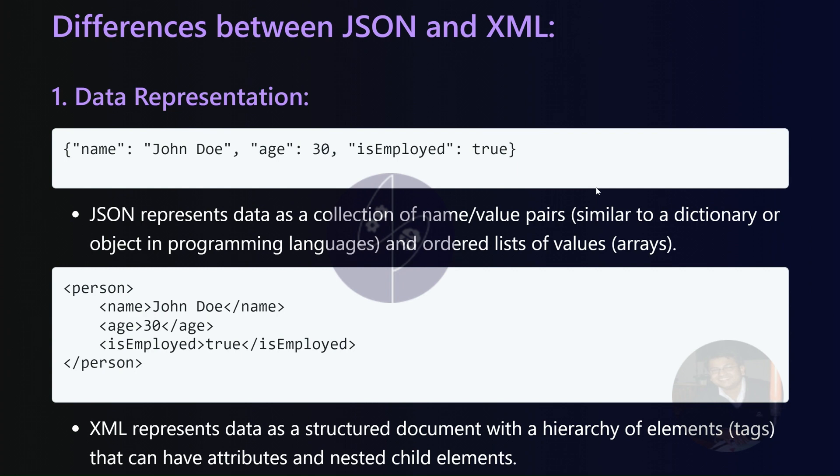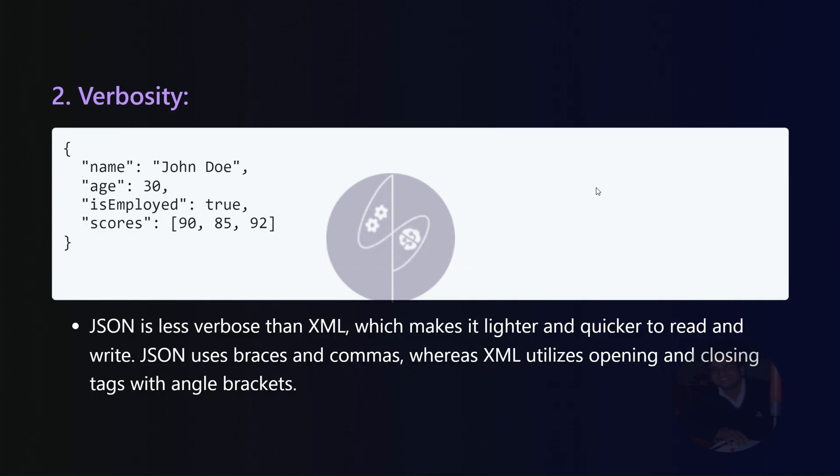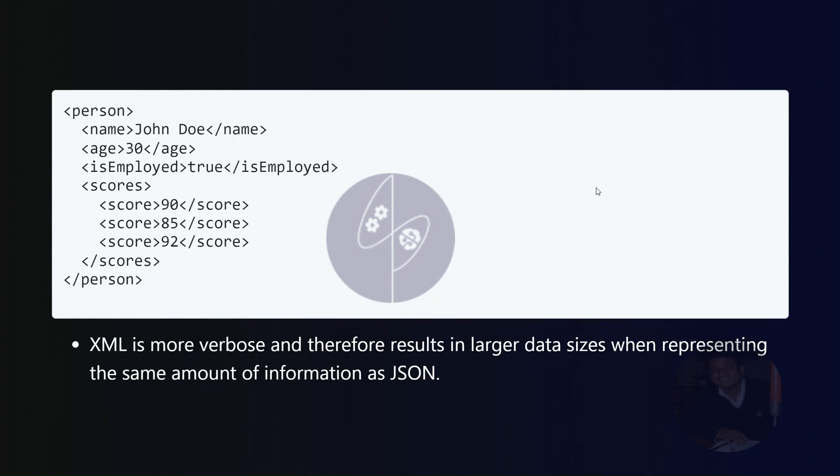Verbosity. JSON adopts a concise syntax with braces and commas, contributing to reduced verbosity and quicker readability. On the other hand, XML tends to be more verbose due to its use of opening and closing tags enclosed in angle brackets, potentially resulting in larger data sizes.